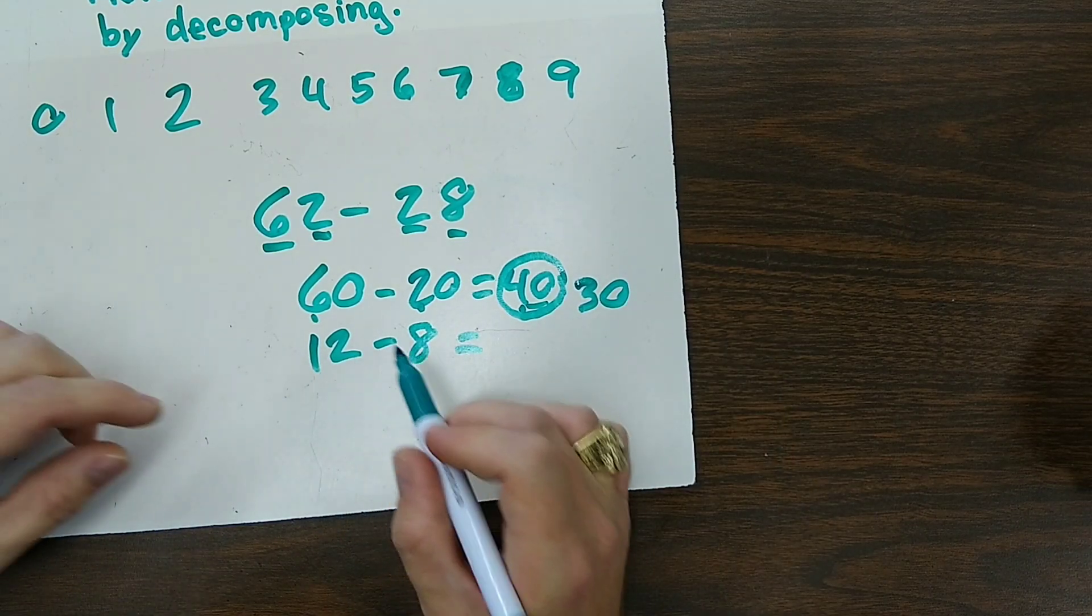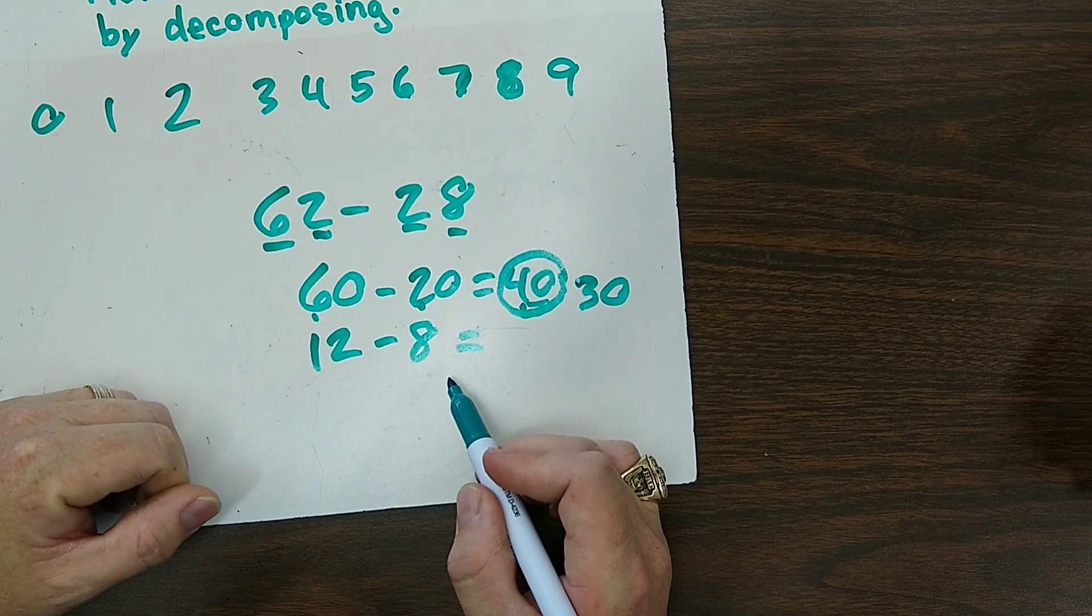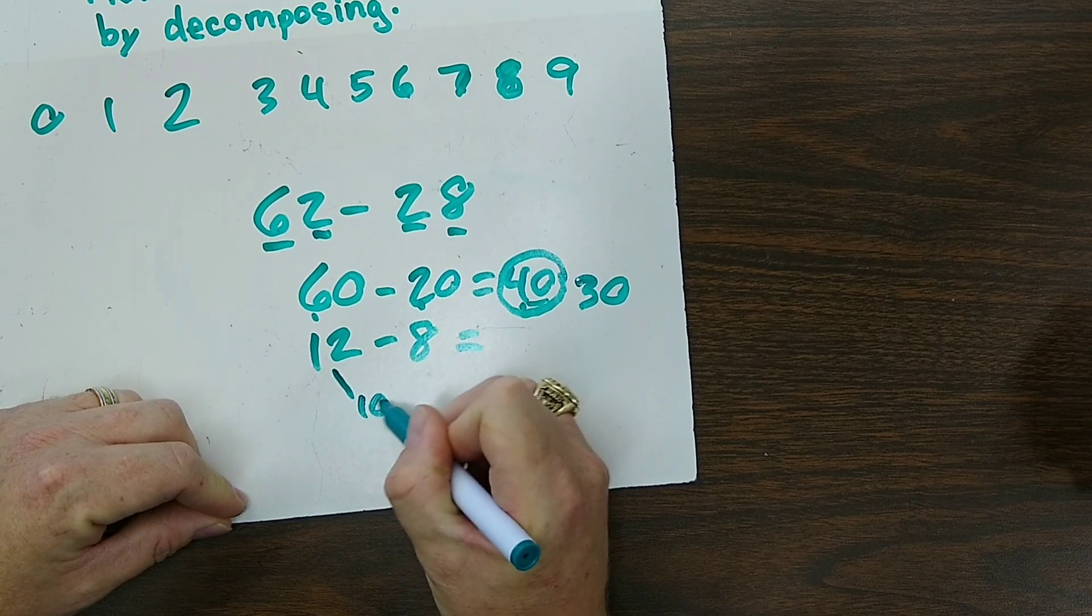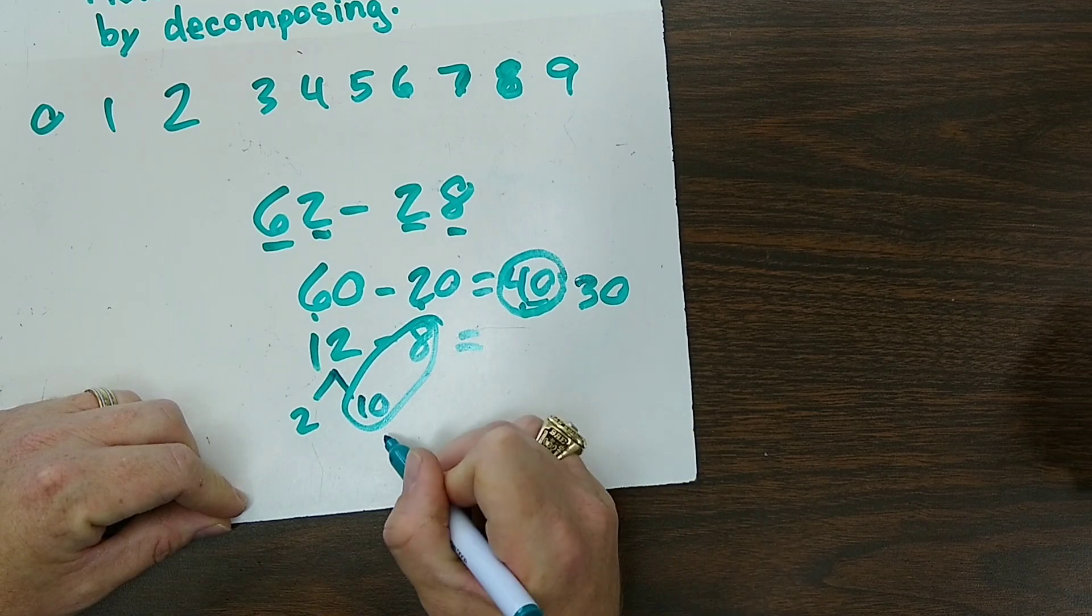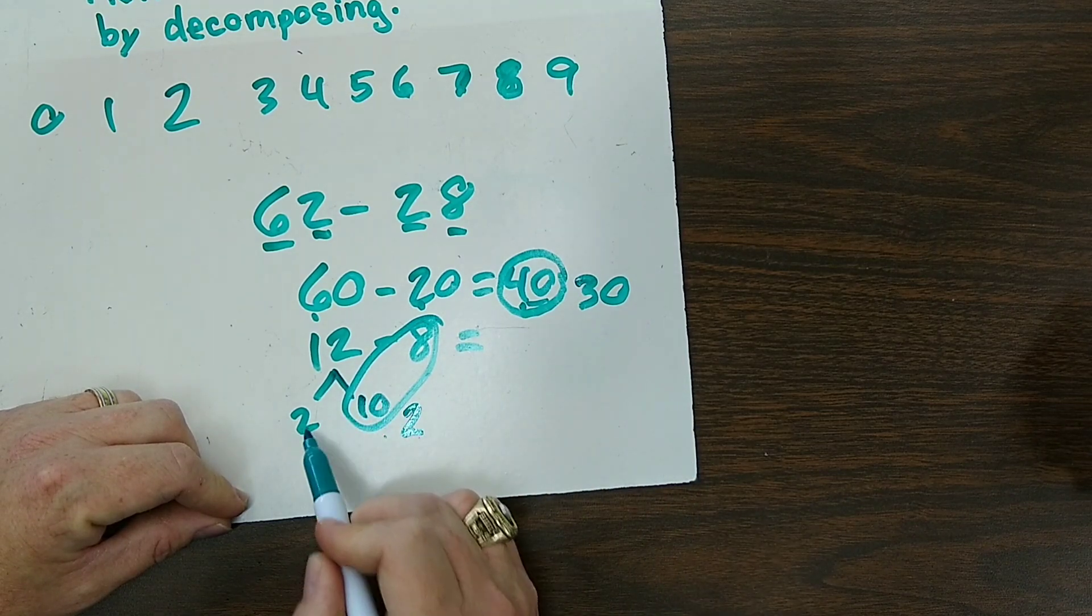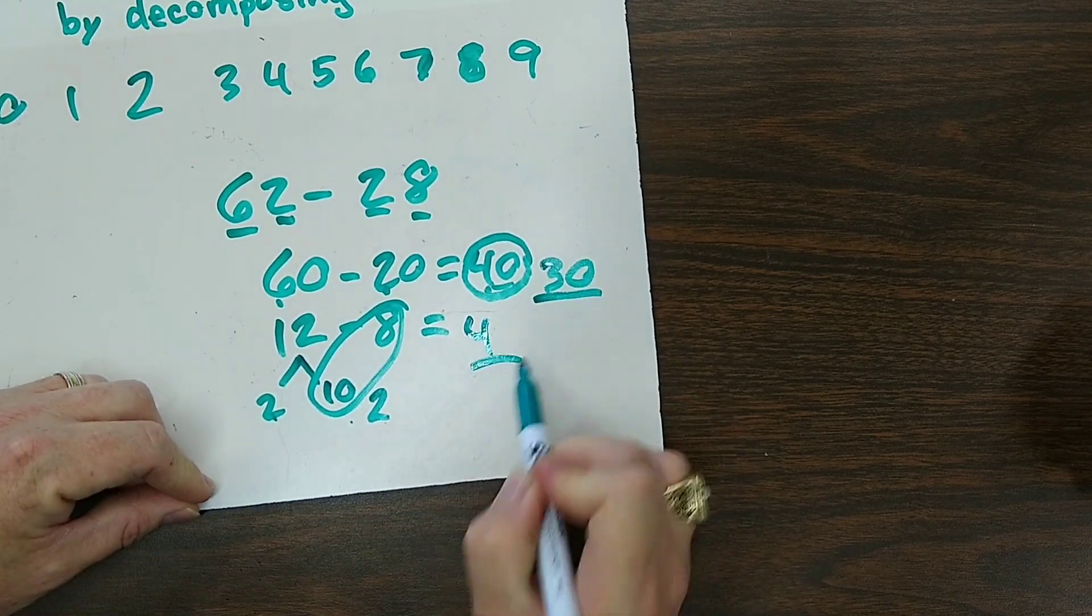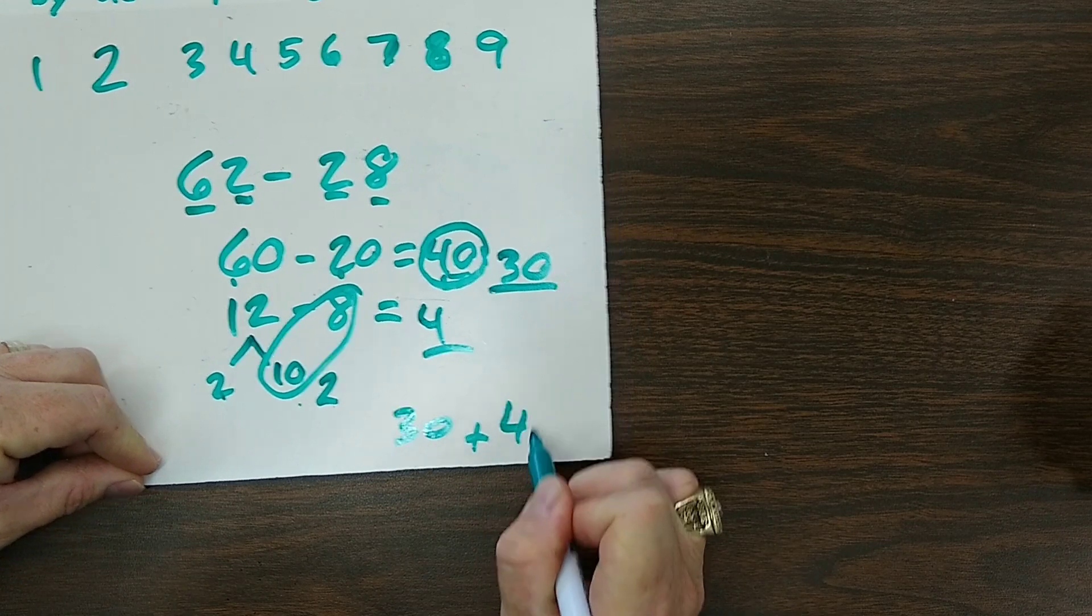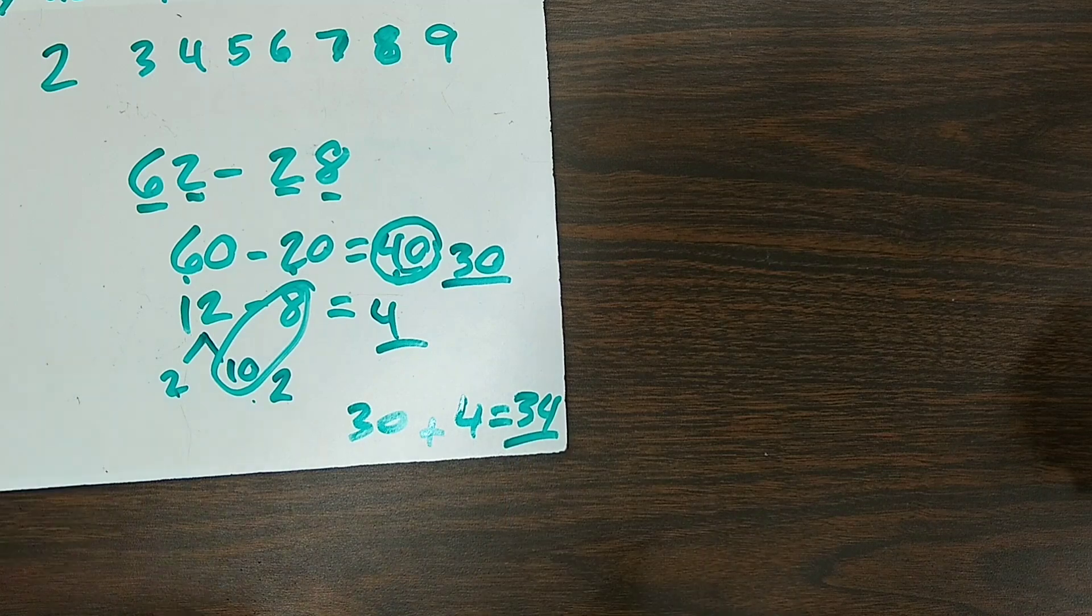Now at this point, you can use a couple different strategies, or you can just count on from 8 to 12. And we can subtract. Some of us have been pulling out a 10 because we know our 10 facts. So 10 take away 8 gives you 2, put that there, and you have 2 left. So your answer there is 4. At this point, you're going to take and put back together your 30 plus your other answer 4, and the answer is, that's right, 34.